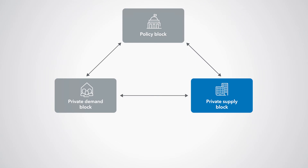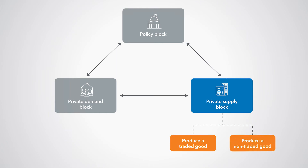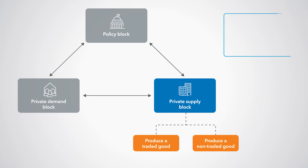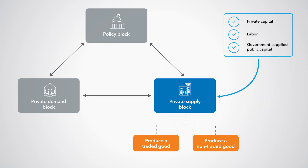The Private Supply Block describes the behavior of firms, which work in perfectly competitive markets with flexible prices. Firms are grouped into two sectors: one sector produces a traded good and the other produces a non-traded good. For production, firms use private capital, labor, and government-supplied public capital, like infrastructure.